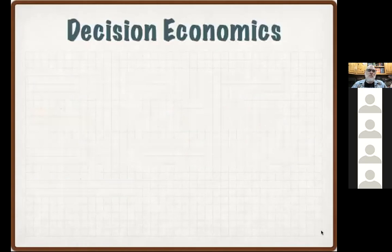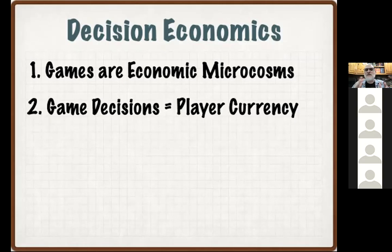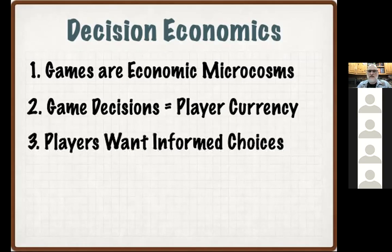What do I mean by economics in this framework when talking about games? I think each individual game session is a microcosm — a small miniature economy at scale. In any economy you're going to have goods, supplies, some sort of currency. In gaming, these are the decisions that we make. We have a certain amount of currency we get to spend over the course of a game session. Like an economy, we want to make informed choices — we don't want to arbitrarily point at the rulebook randomly.